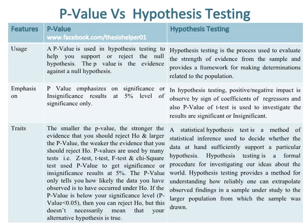P-values are used by many tests such as the Z-test, T-test, F-test, and chi-square test to get significance or insignificance results at 5%. The p-value only tells you how likely the data you have observed is to have occurred under H0. If the p-value is below your significance level — that is, less than 0.05 — then you can reject H0. But this doesn't necessarily mean that your alternative hypothesis is true.